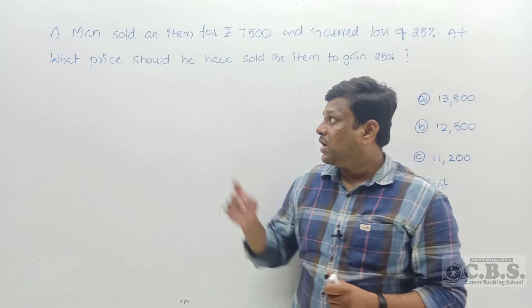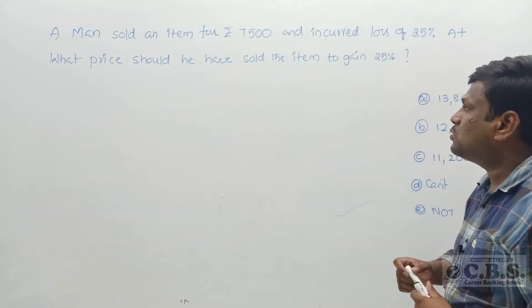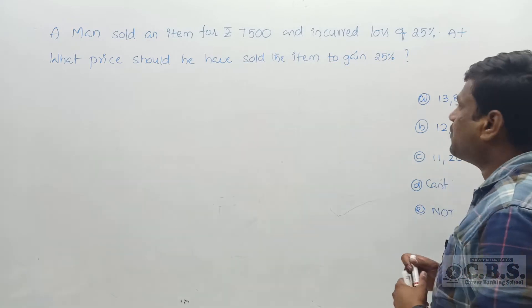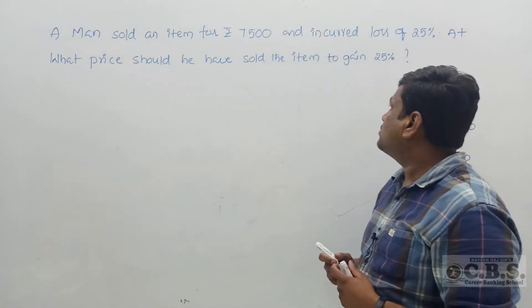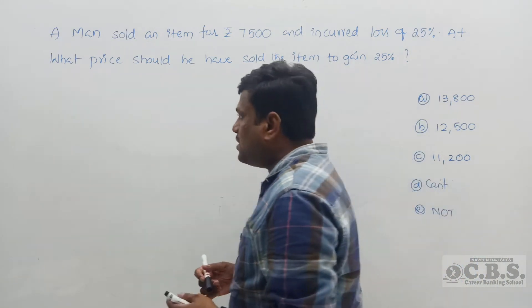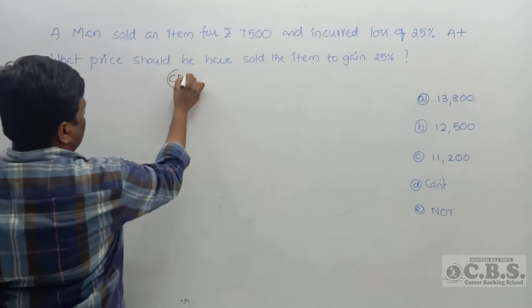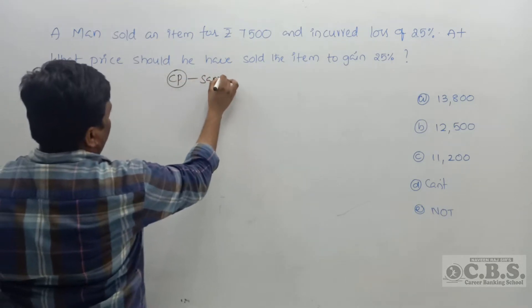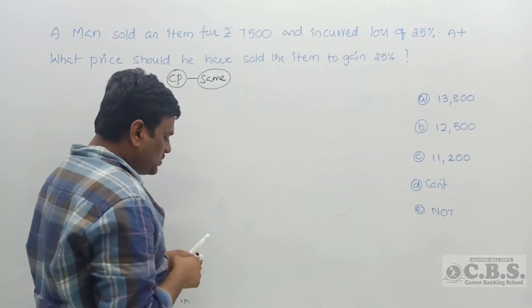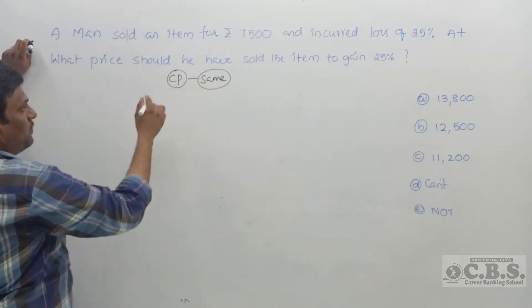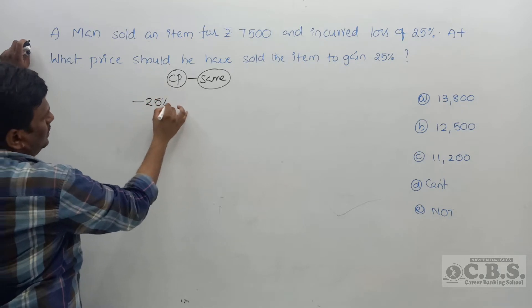Question one: a man sold an item for 7,500 rupees and incurred a loss of 25%. At what price should he have sold the item to gain 25%? Here the cost price is the same, so we can use the fraction concept and ratio concept.